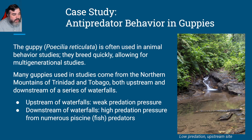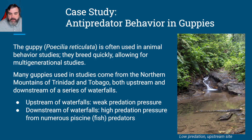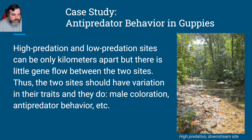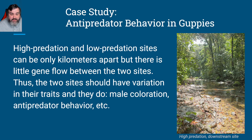Upstream has very weak predation pressure — not very many predators, and if there are, they are relatively small. Whereas downstream, there's a lot more predation and the predators tend to be a bit bigger. These sites can only be a few kilometers apart, but there's very little gene flow between them. Thus, they have variation in their traits, including the coloration of the males, anti-predator behaviors, and so forth.